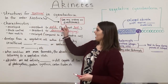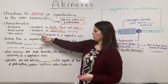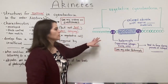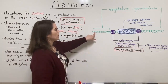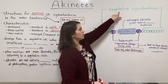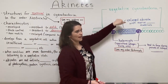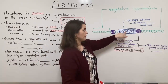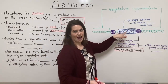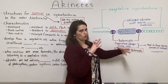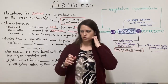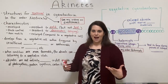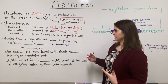Another characteristic of akinetes is that they are enlarged compared to vegetative cells. Over here in green I've drawn the vegetative cyanobacteria, and you can see that they are a lot smaller than the large akinete. So the akinete is quite large compared to a normal, metabolically active vegetative cyanobacterium.